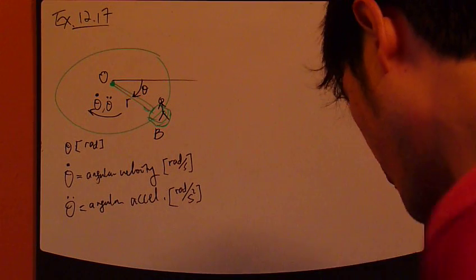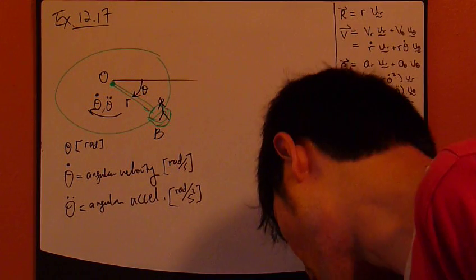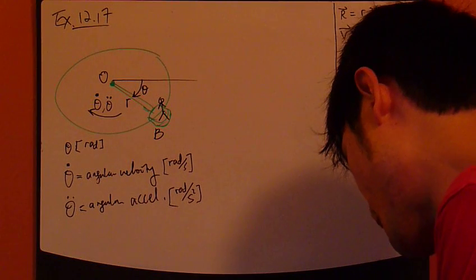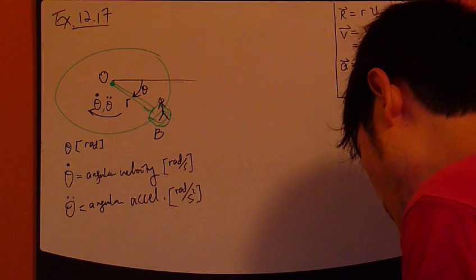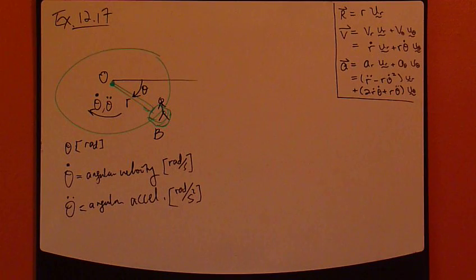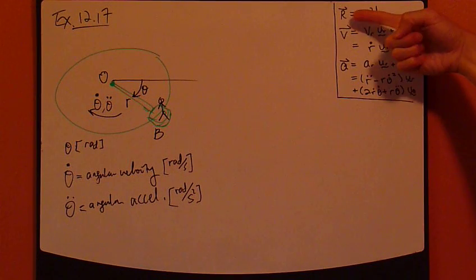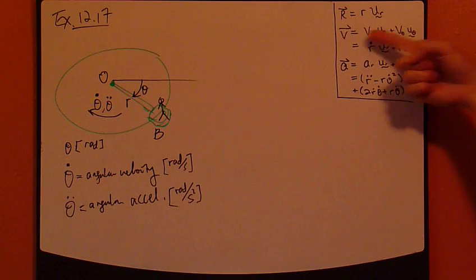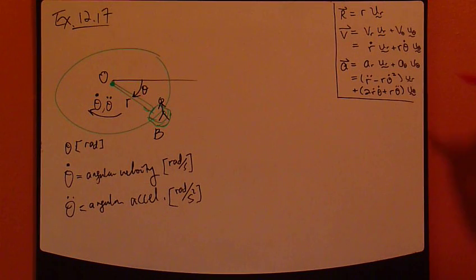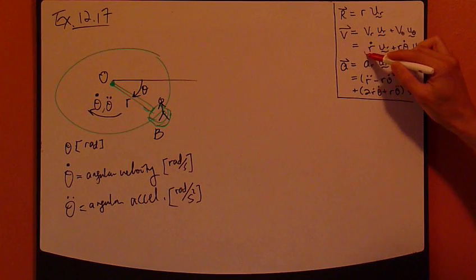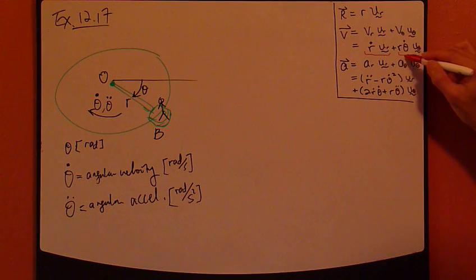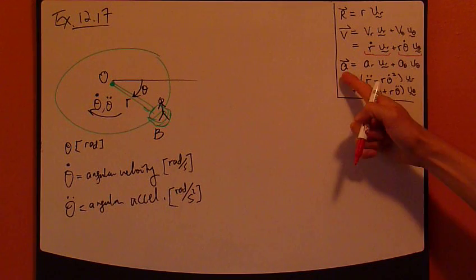So, the velocity vector and acceleration vector, and particularly, you have to find the radial and transverse components. So, here's the summary of what we've done. Position r, velocity vector, two components. First component, second component, and then acceleration. Again, two components.